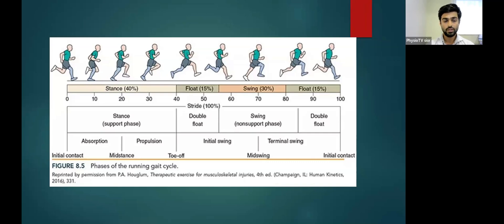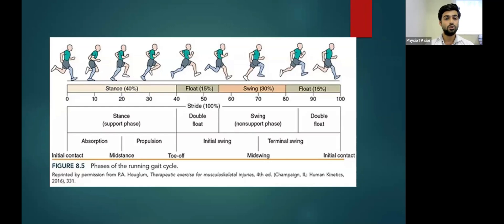The floating phase — if we compare the normal gait of human locomotion to the running cycle, there is a replacement of the double support phase, which is replaced by the double floating phase. In the double floating phase, none of the feet are in contact with the ground, while in the normal gait cycle, one foot is always in contact with the ground. The double float phase is an important phase in the running cycle to generate momentum and velocity.